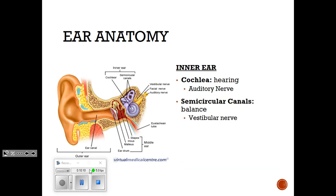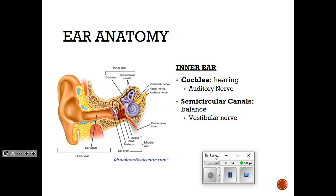Following the middle ear, we have the inner ear. We'll go into more detail on the following slides. The inner ear has a few structures. First, the cochlea — it looks like a little snail shell. It is the structure involved with hearing and is attached to the auditory nerve. Attached to that are three loopy tubes called the semicircular canals, whose main job is balance — they're attached to the vestibular nerve. We'll focus on the auditory nerve for hearing and the vestibular nerve for balance.